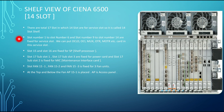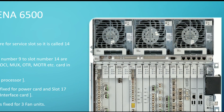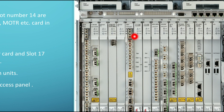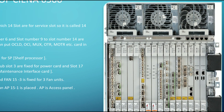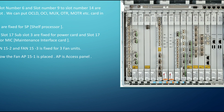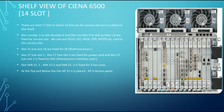Slot number one to six and slot number nine to fourteen are fixed for the service slots, and we can install OCLD, OCI, MERX, OTR, MOTR, TRM, or any other card used for dropping the service. Slot seven and slot eight are fixed for the cross-connect card.